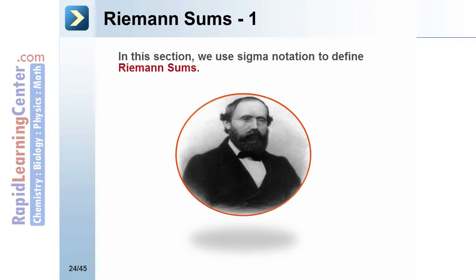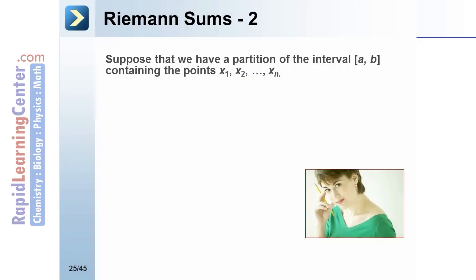Riemann Sums. In this section we use sigma notation to define Riemann sums. Suppose that we have a partition of the interval [a, b] containing the points x sub 1, x sub 2, up through x sub n.